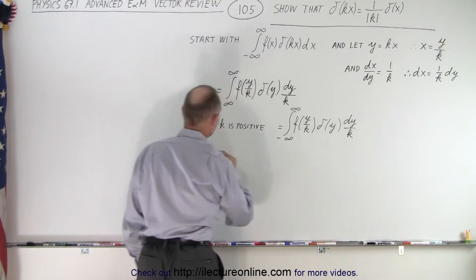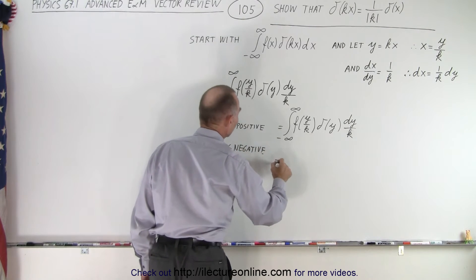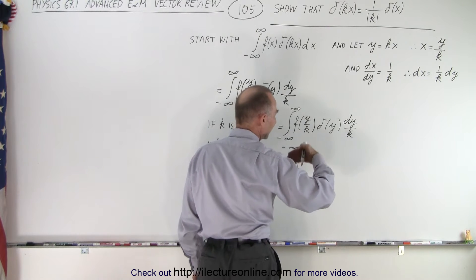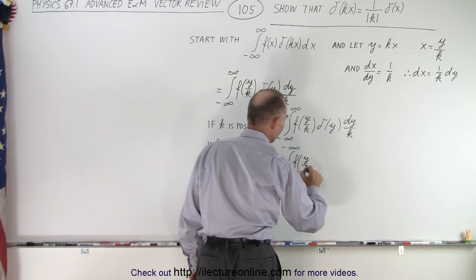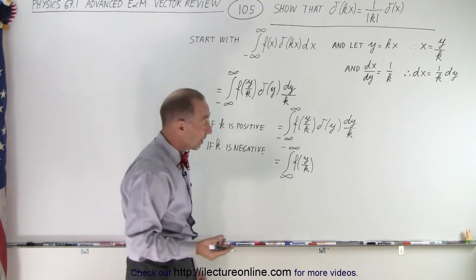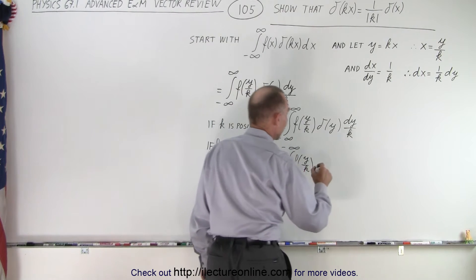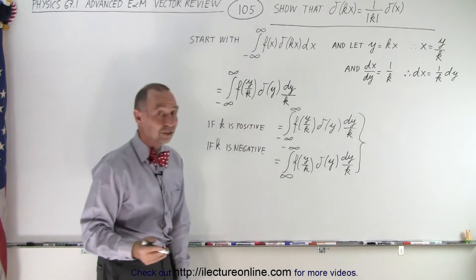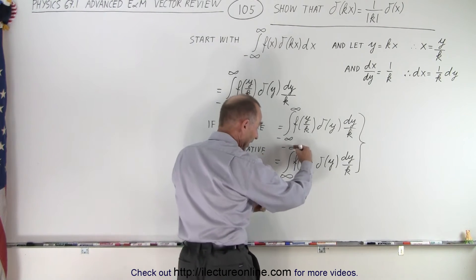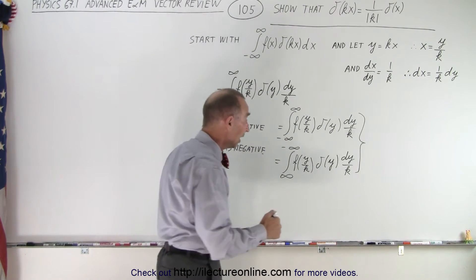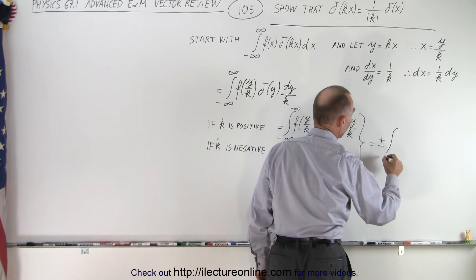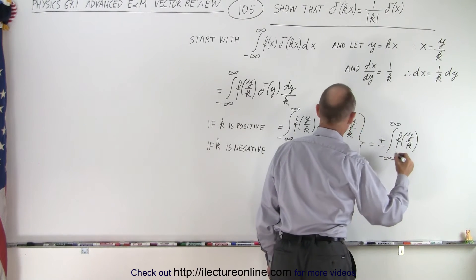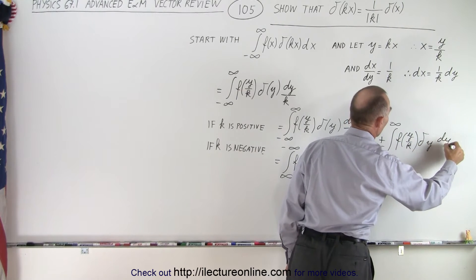But if k is negative, then this integral becomes the integral from infinity to minus infinity, because the variable becomes a negative quantity — essentially y becomes negative y. Therefore the limits of integration switch. We can put a negative sign in front and switch the limits back to the normal sense, giving us plus or minus the integral from minus infinity to infinity of f(y/k) times delta of y times dy over k.